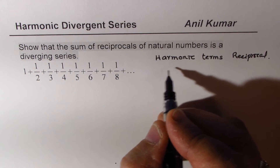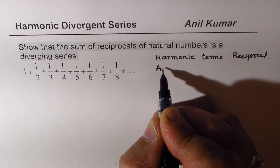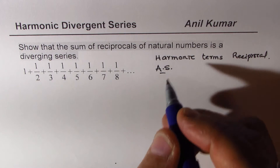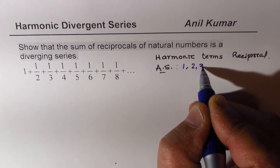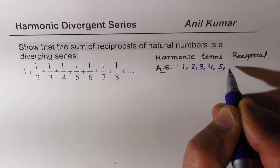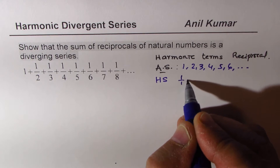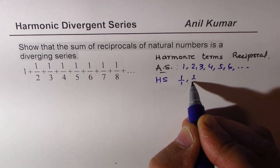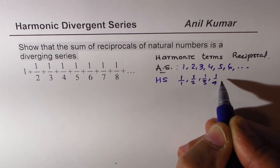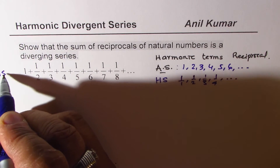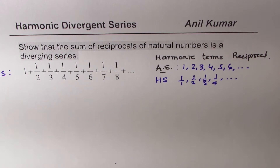The reciprocals are in arithmetic series. In this particular series you have the arithmetic series one, two, three, four, five, six and so on, which gives us our harmonic series: one over one, one over two, one over three, one over four, and so on. So the given series is the harmonic series. Now we need to show that it is a diverging series.